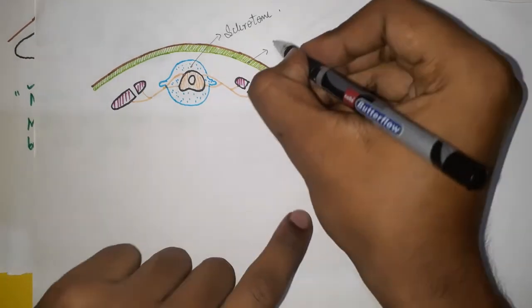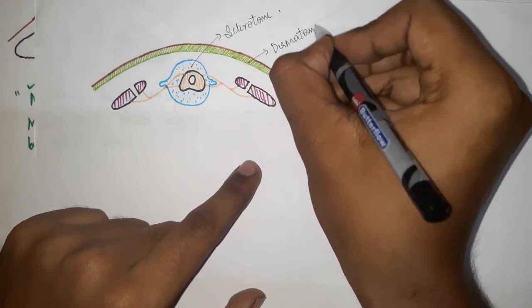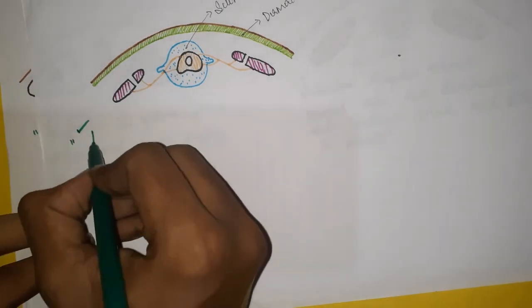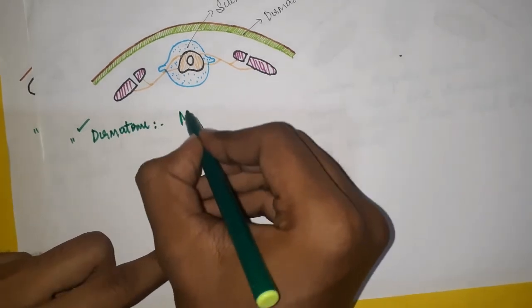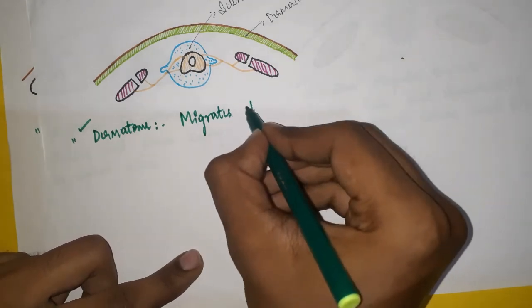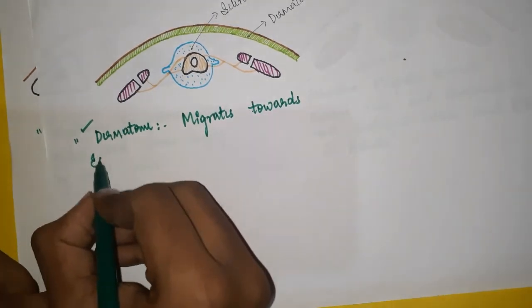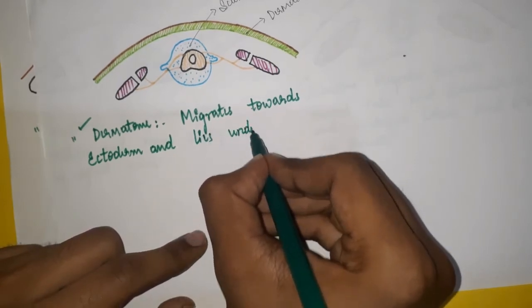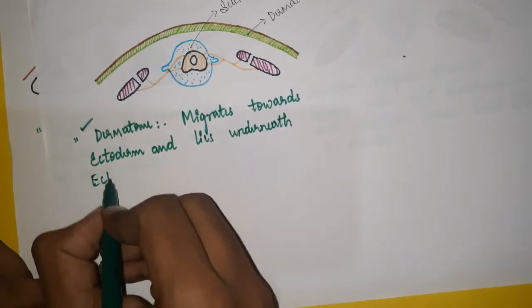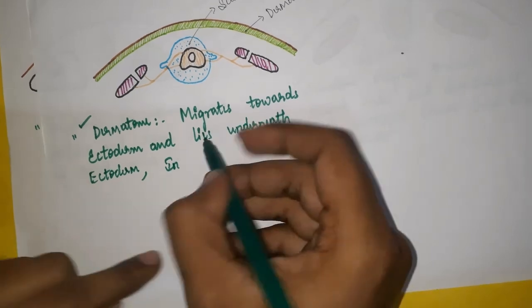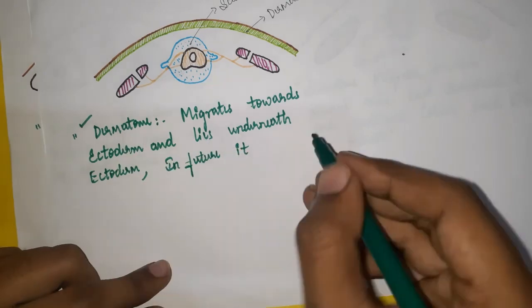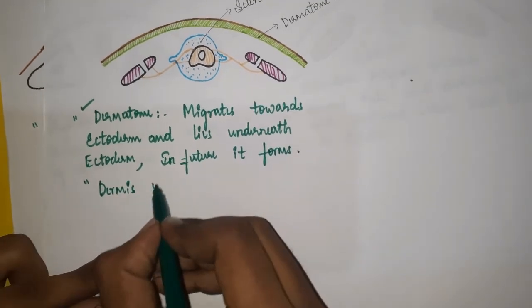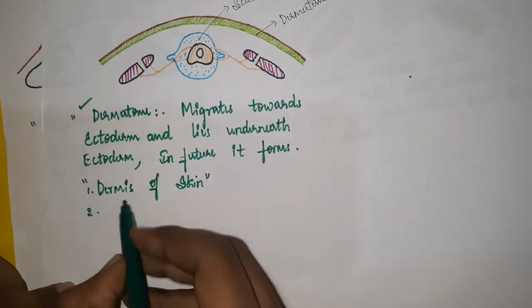The dermatome migrates towards the ectoderm and lies underneath it. In future, dermatome forms the dermis of skin and subcutaneous tissue.